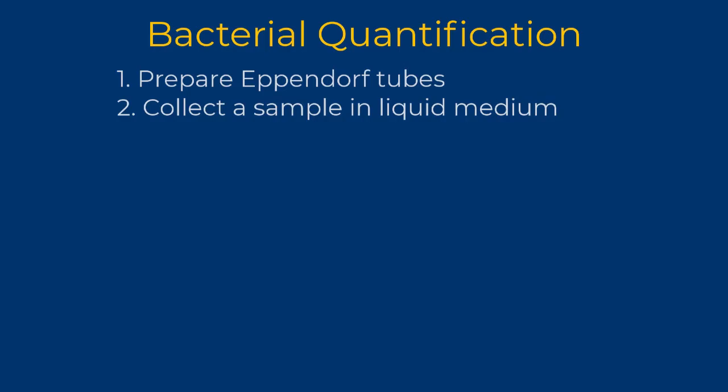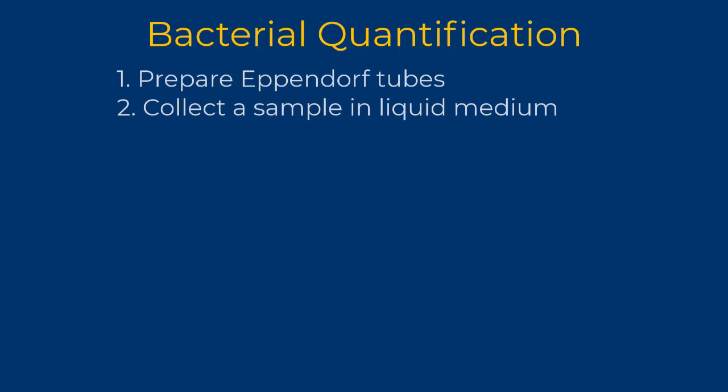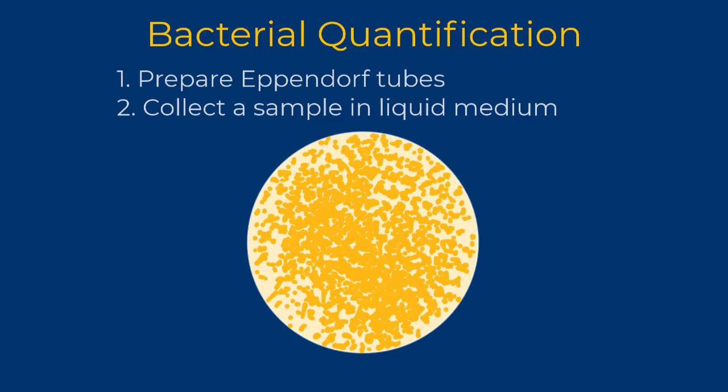If you were to spread the resulting liquid sample on a plate, there would be too many bacteria to count. To obtain a countable plate, you will prepare a serial dilution of your sample, spread the liquid from each of the tubes in the series on a separate plate.